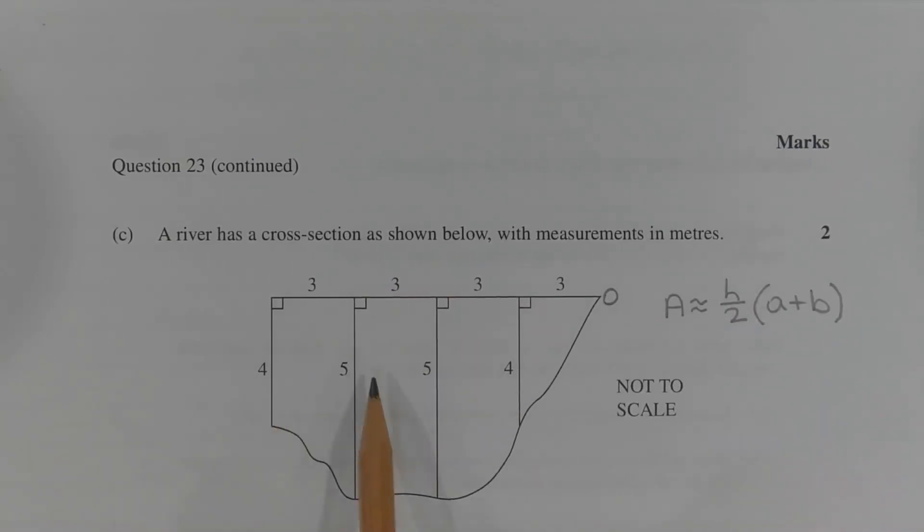Now because there are four sections, four applications of the trapezoidal rule will be required. And there are two ways to go about this. Either we can apply this formula here four times, and this formula is for one application of the trapezoidal rule, or we can apply the extended form of the trapezoidal rule.